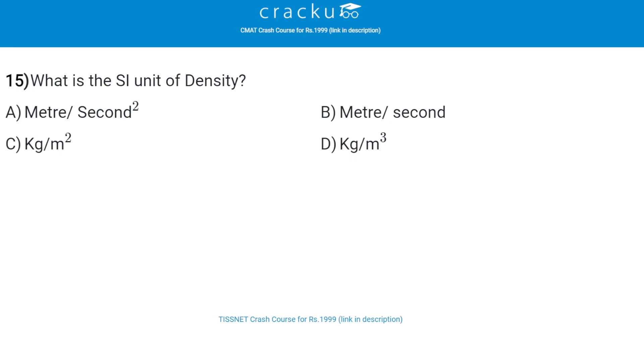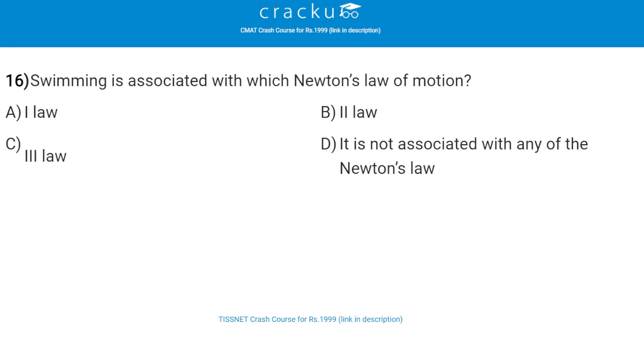Next: what is the SI unit of density? The correct answer is kilogram per meter cube, that is option D.